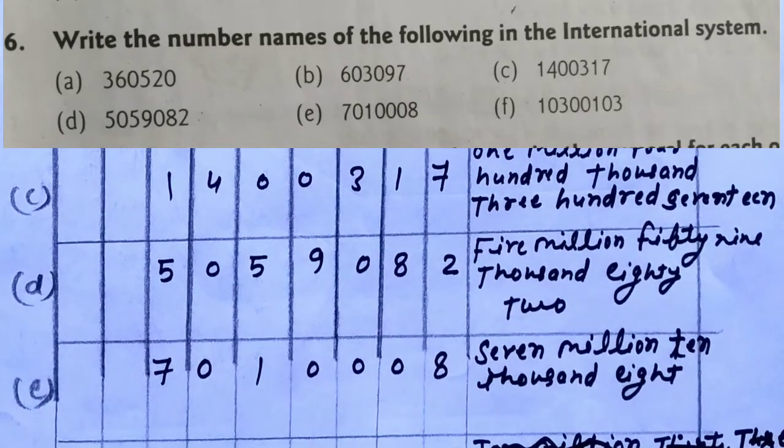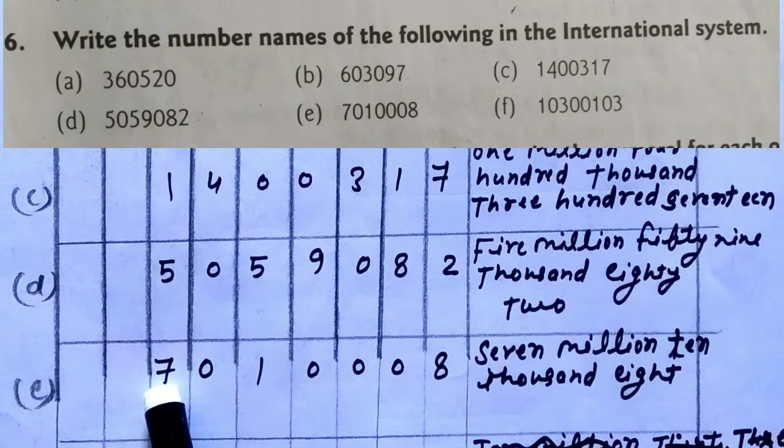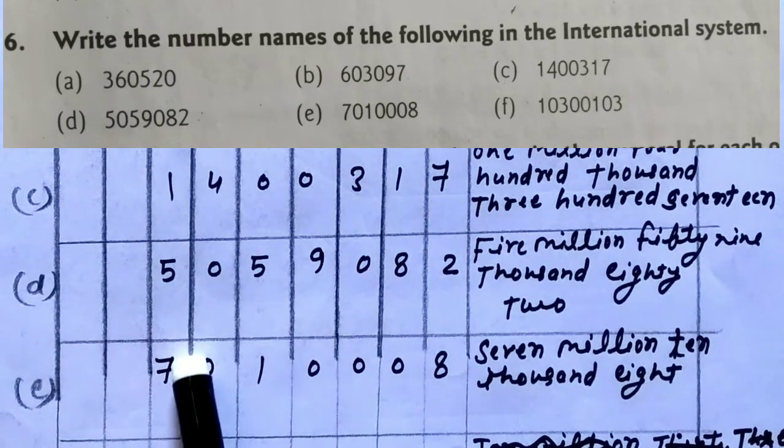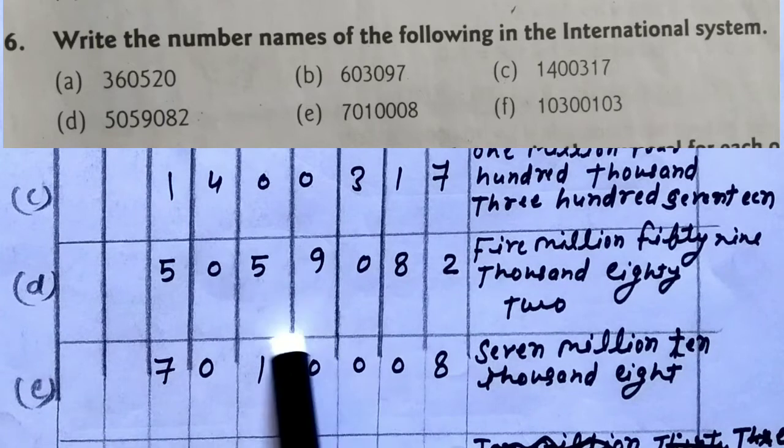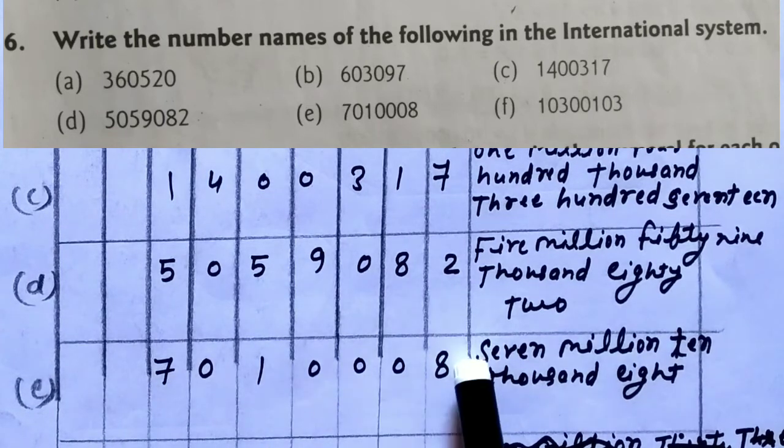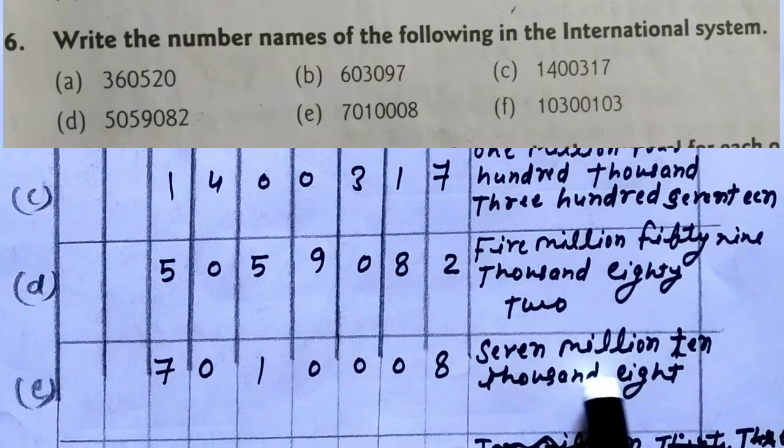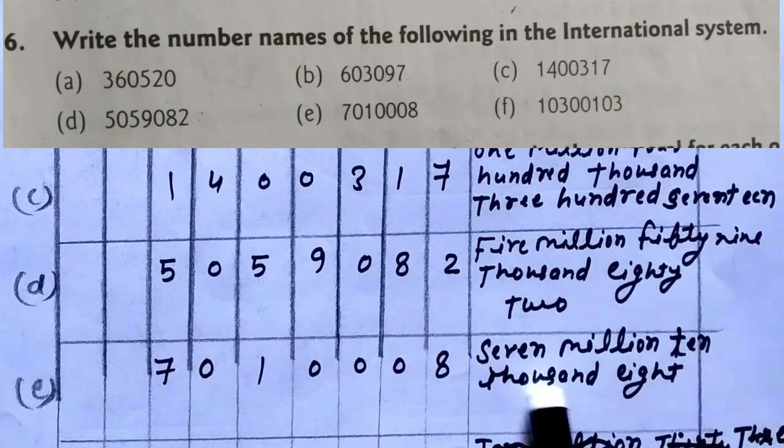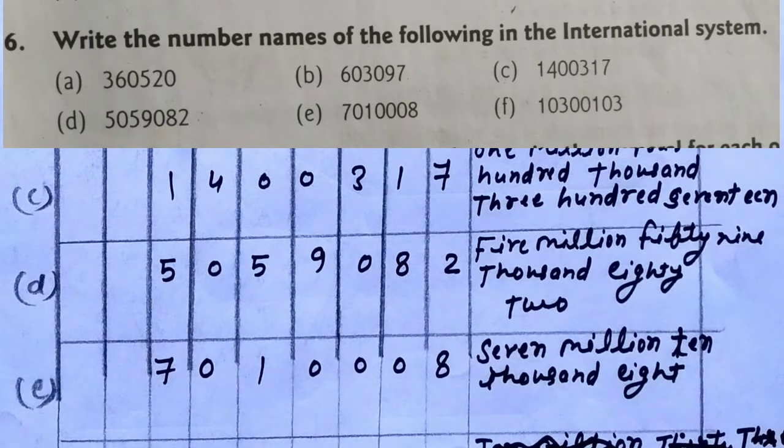Now let's see. 7 million. In thousand period it is written as 010, that means 10. 10 thousand. 7 million, 10 thousand. And in ones period it is only written here 8. So 8. 7 million, 10 thousand, 8.